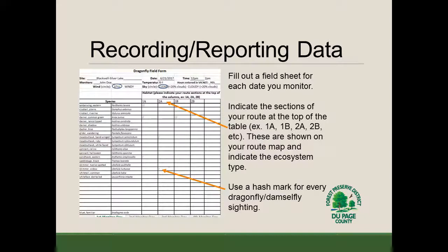Let's take a look at what the recording and reporting data sheets actually look like. On the top, you'll see some basic information you need to fill out, such as your site, start and stop time, and the weather conditions. Bring out a fresh sheet each time you go out monitoring. Indicate the sections of your route at the top of your table — 1A, 1B, 2A, 2B — whatever sections your route has. As you go and observe, use a hash mark in each column corresponding to the route section you're observing in.